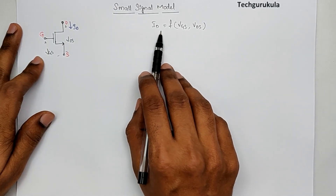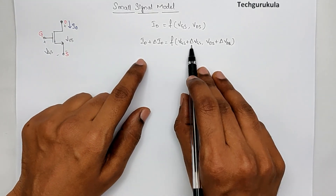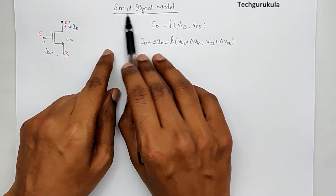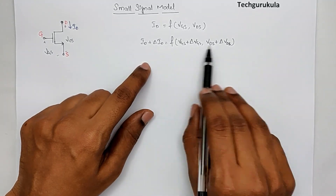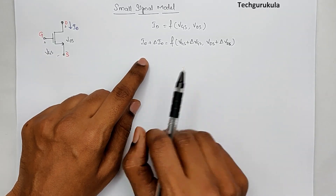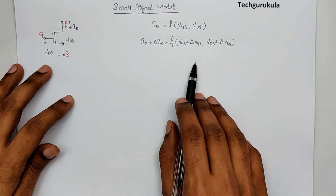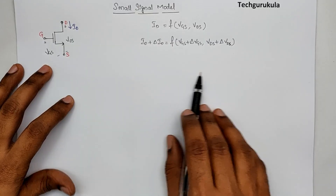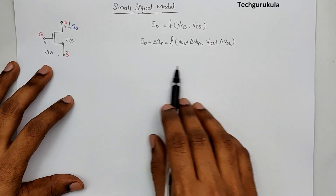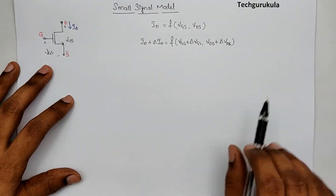There would be a change in ID — let's call that delta ID. Now if we assume that delta VGS and delta VDS are small — that's the whole point of talking about small signal model — then the resultant delta ID is also assumed to be small. In that case, we can expand this function using a Taylor series expansion only to first order, because as these values are small, the function can be represented with just the first derivatives.